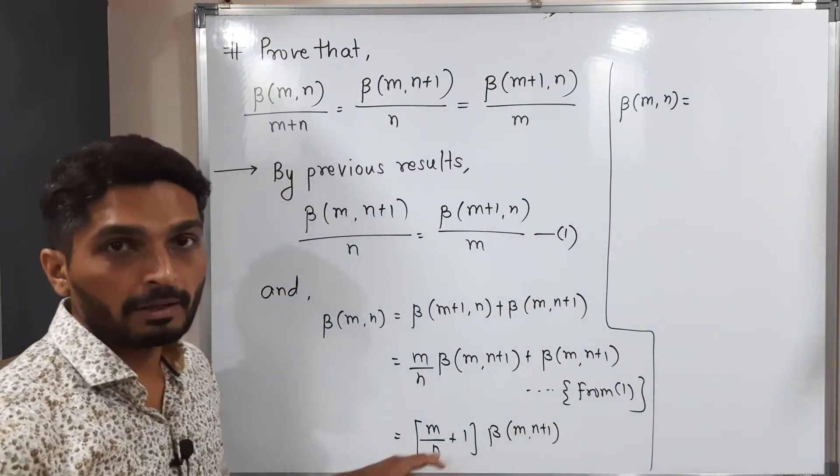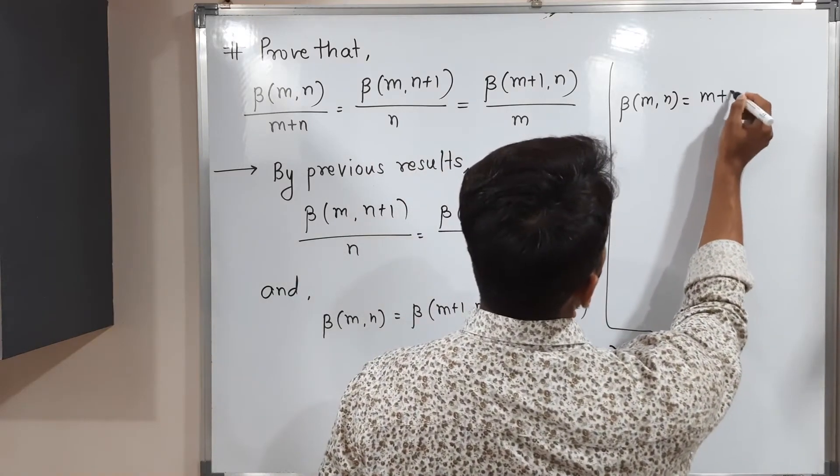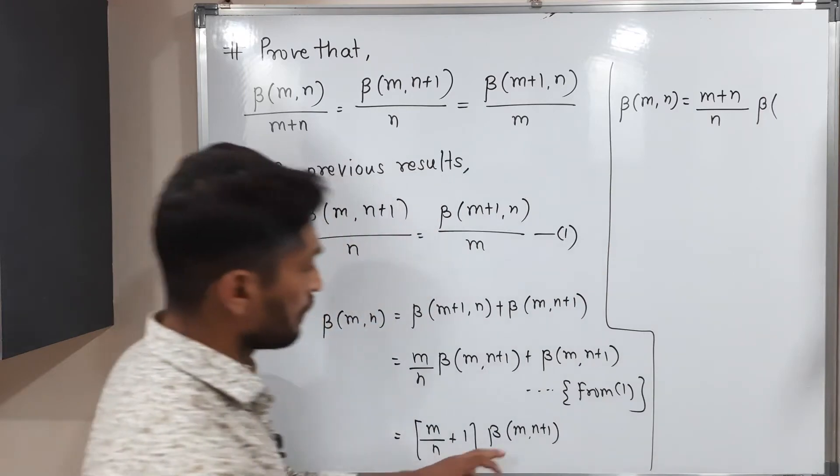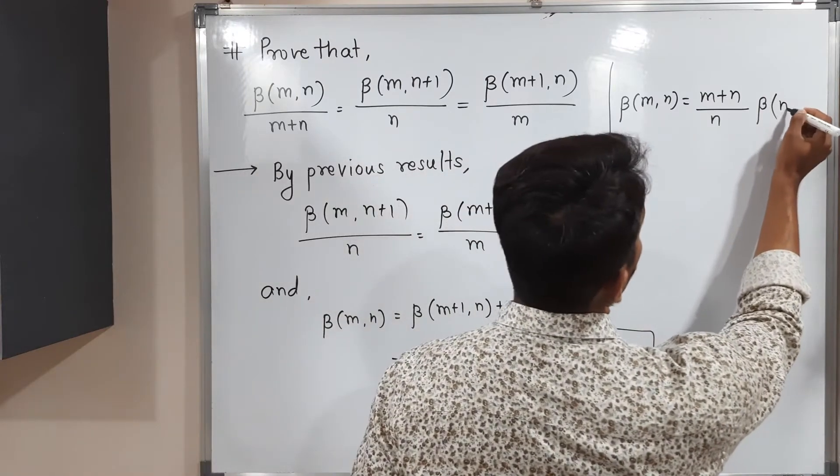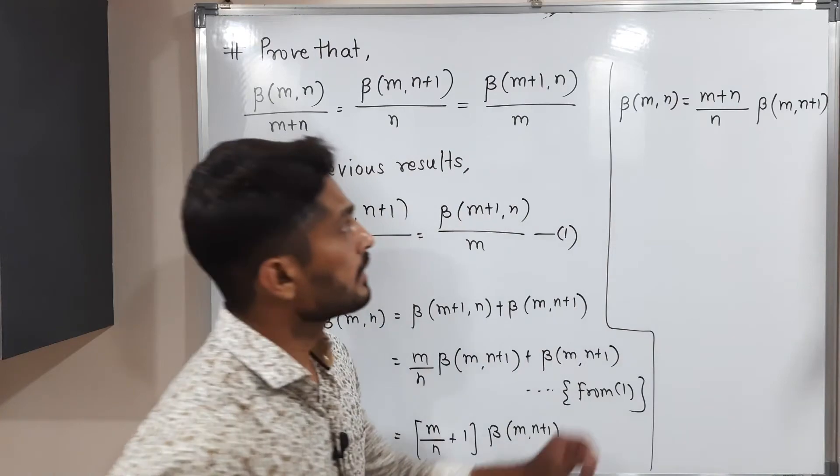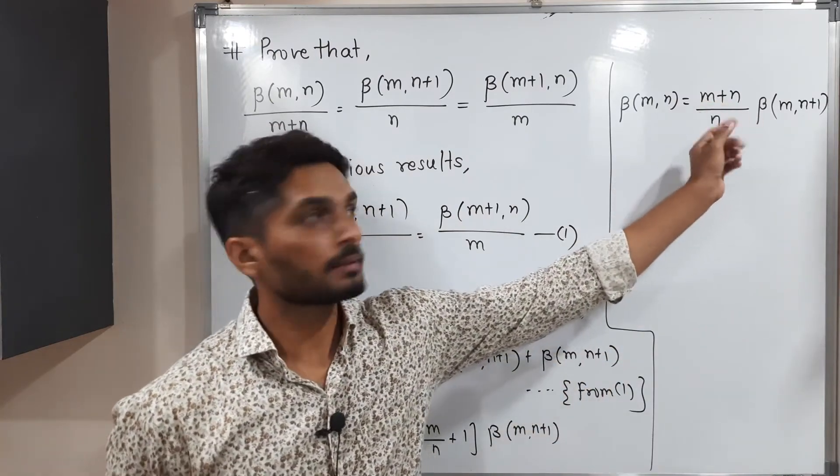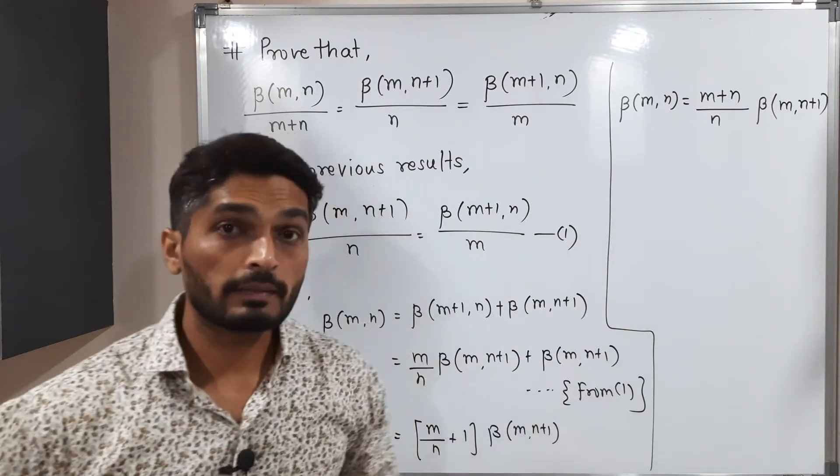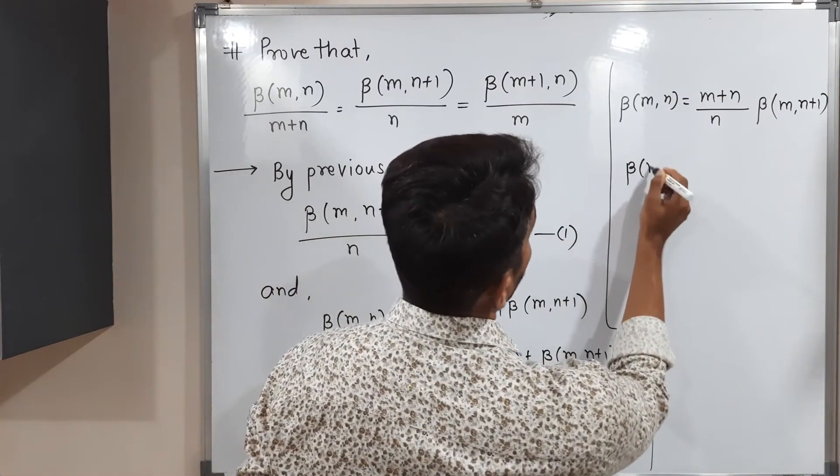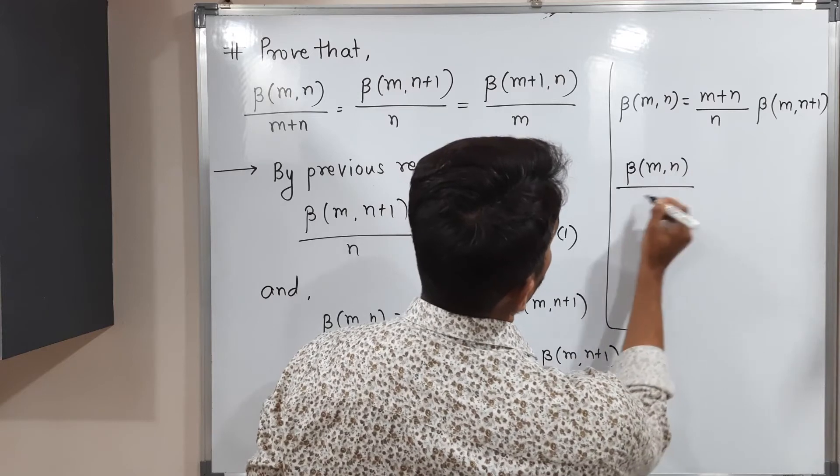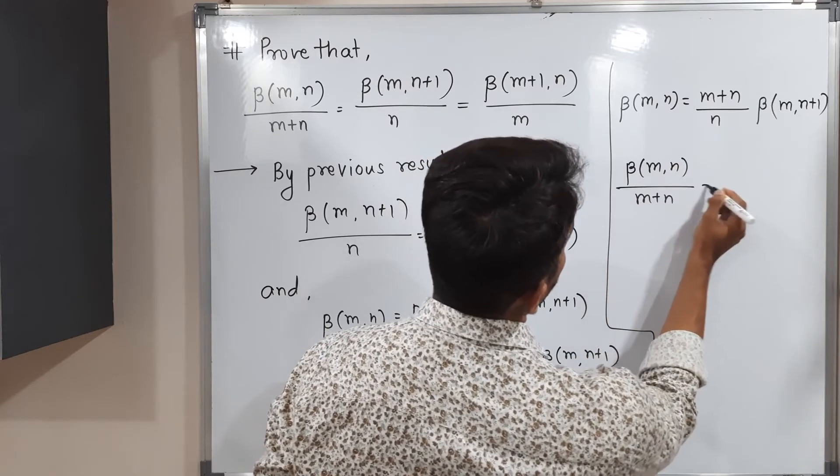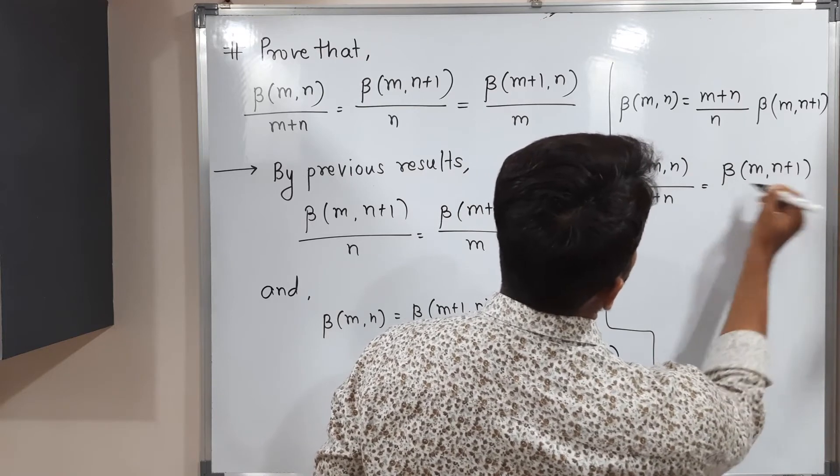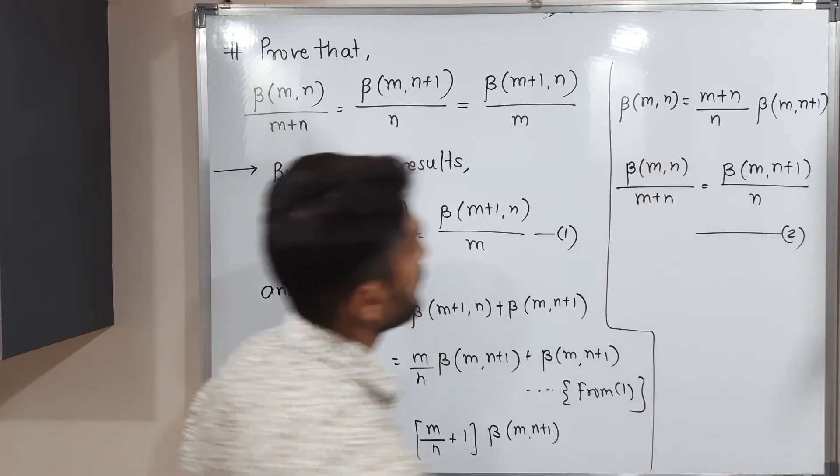What are we getting by cross multiplication? (m+n)/n times beta of m, n+1. Since there is a multiplication between them, if you shift it there you will have a division. Therefore, beta of m, n divided by (m+n) is equal to beta of m, n+1 divided by n. I will call it equation number 2.